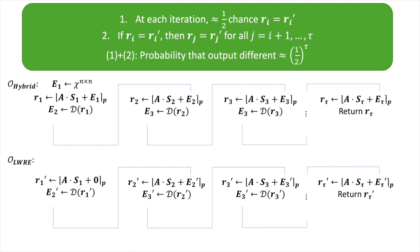No matter what noise matrix we get from the previous iteration, the probability that A times S plus noise will coincide in the two distributions is roughly one half, by how we set Q. Furthermore, if at least one chain iteration produces the same seed Ri in both distributions, then all subsequent iterations will coincide—because the error sampler is deterministic. So the probability that the outputs of the two oracles differ on any given input is at most (1/2)^tau, which is negligible for tau that is super-logarithmic.